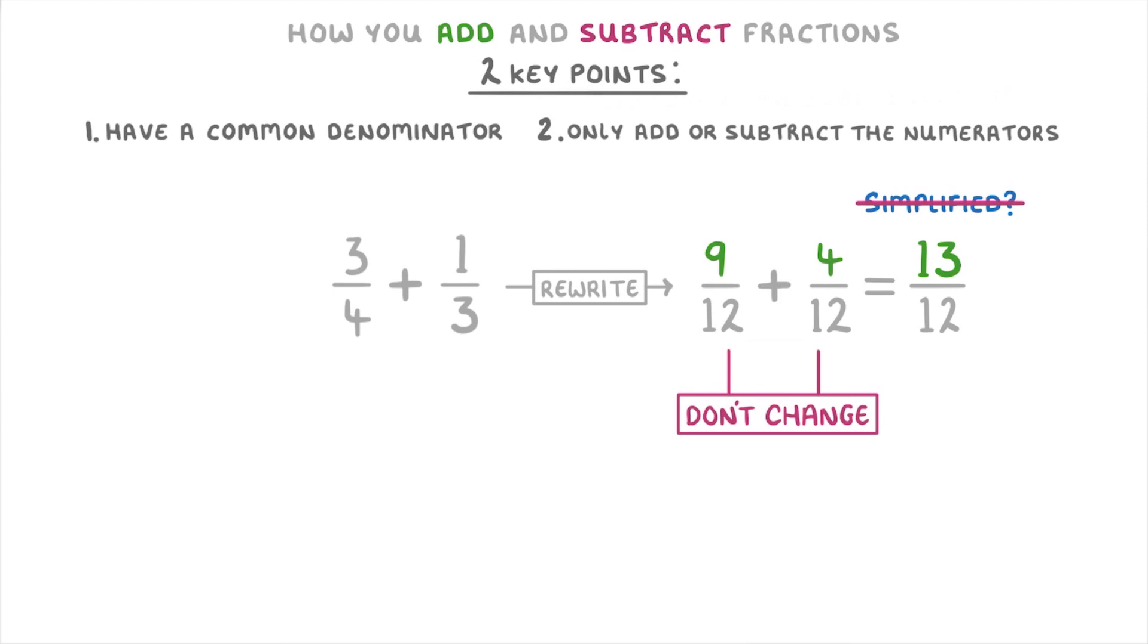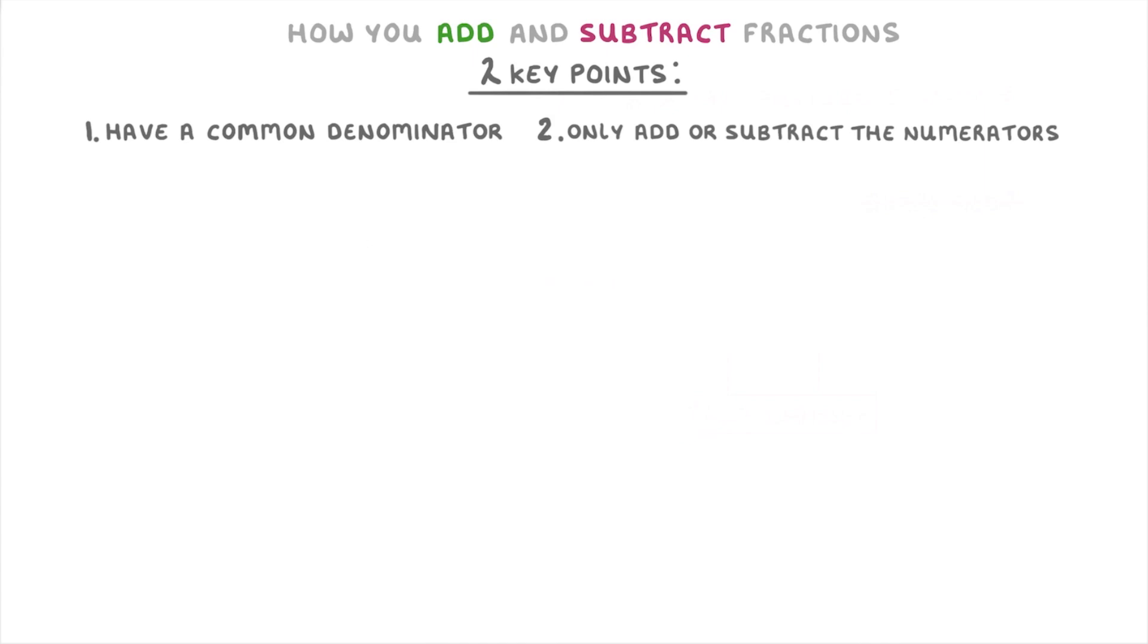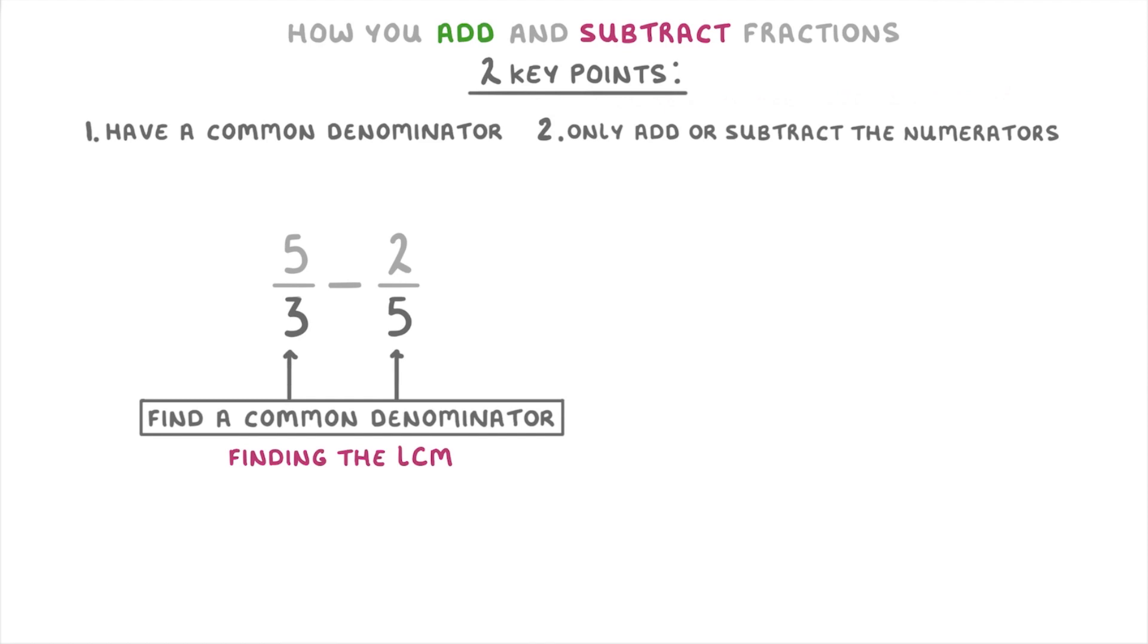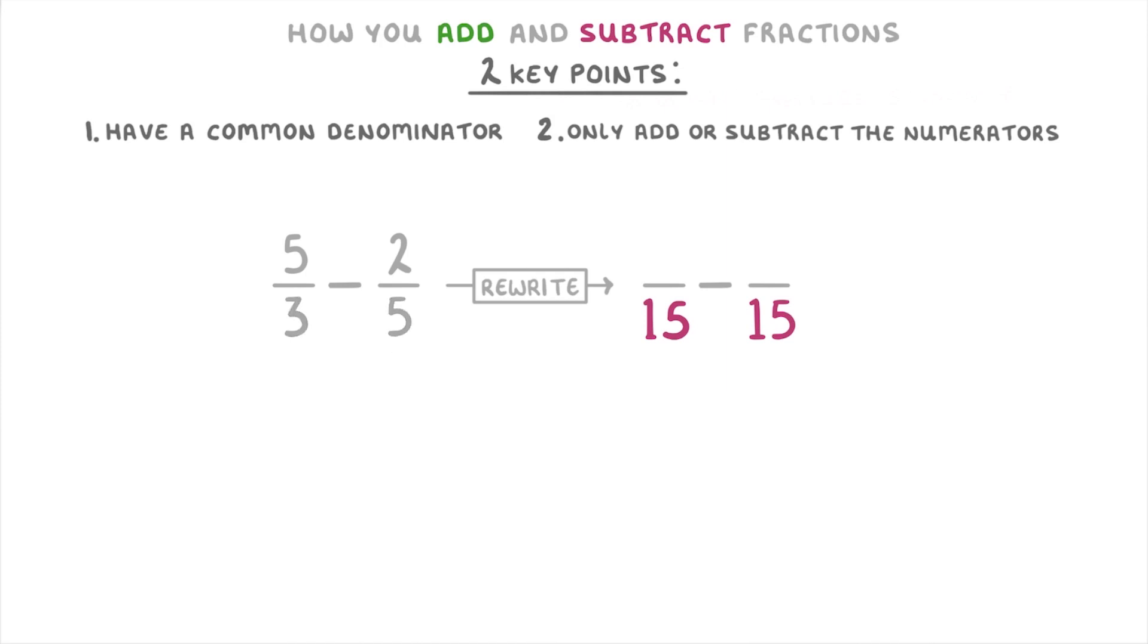Now let's take a look at this subtraction question where we've got to subtract 2/5 from 5/3. Like before, the first step is to find a common denominator, which we do by finding the lowest common multiple of 3 and 5, which is 15. So we go ahead and rewrite our fractions with 15 on the bottom and figure out what the new numerators will be. To get 15 we have to multiply 3 by 5, so we also have to multiply 5 by 5 to get 25.